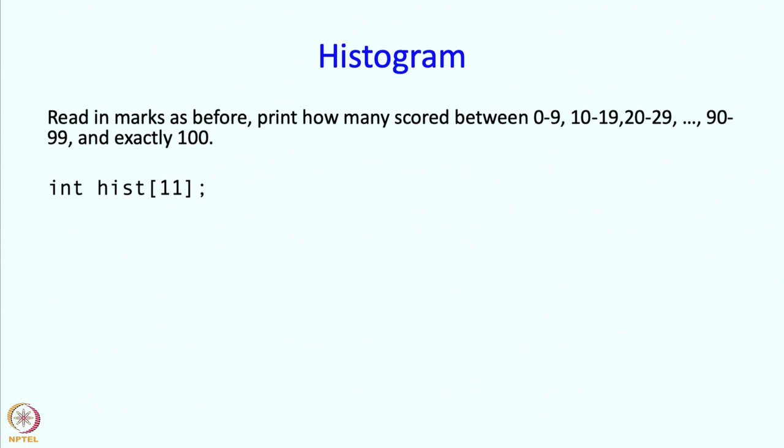Since a person can get 100 marks, we need to have a way to say that someone has got 100. So there are 11 buckets, including the last bucket which may be thought of as being between 100 and 109, though nobody is going to get more than 100. So we have 11 possible numbers to output, or 11 buckets into which the marks are supposed to be put.